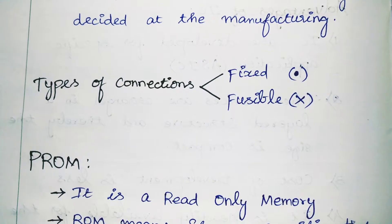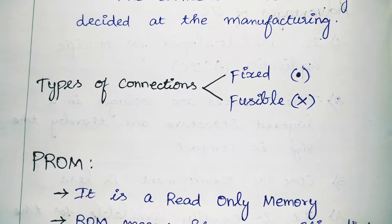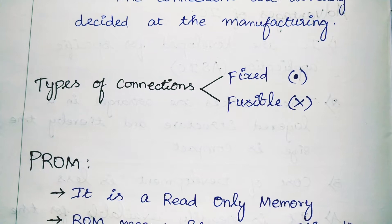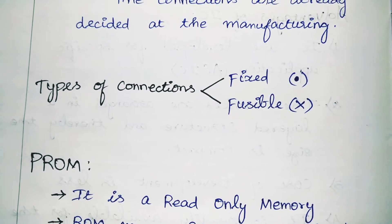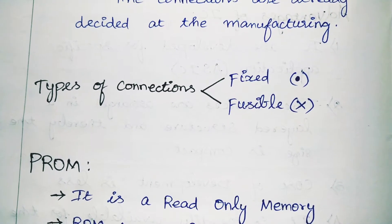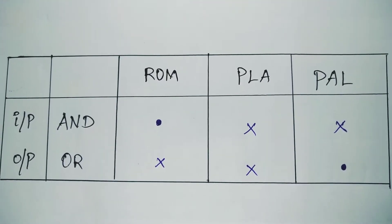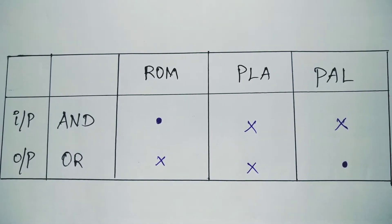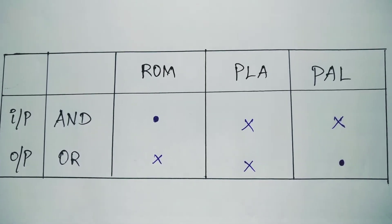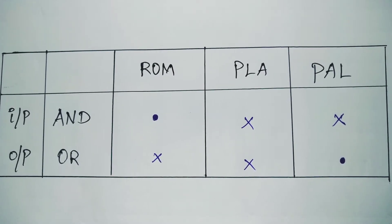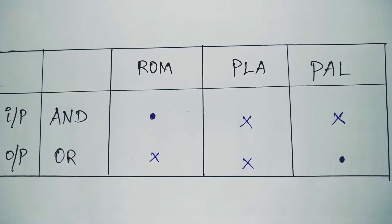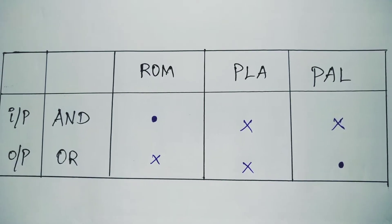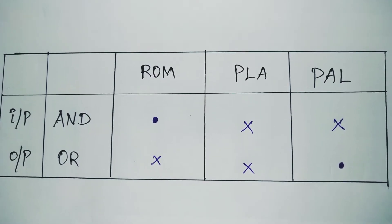A fixed connection is denoted as a dot and a fusible connection is denoted as a cross mark. The AND gate is the input and the OR gate is the output. In read-only memory, the AND gate is fixed and the OR gate is fusible. In programmable logic array, both are fusible. In programmable array logic, the AND gate is fusible and the OR gate is fixed.